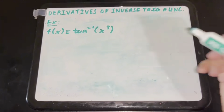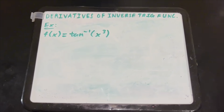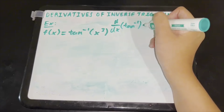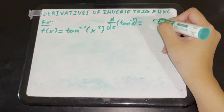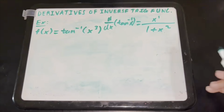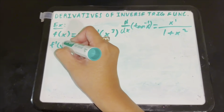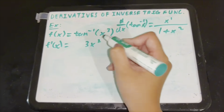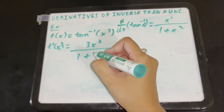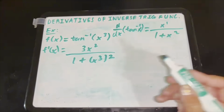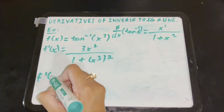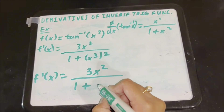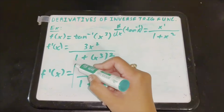Now let's do some example problems. Here we have f of x equals arc tangent of x cubed, and we're taking the derivative. The derivative of arc tangent is x prime over 1 plus x squared. Our x here is x cubed, so f prime of x equals 3x squared over 1 plus x cubed squared. Simplifying, f prime of x equals 3x squared over 1 plus x to the sixth. That is our final answer.